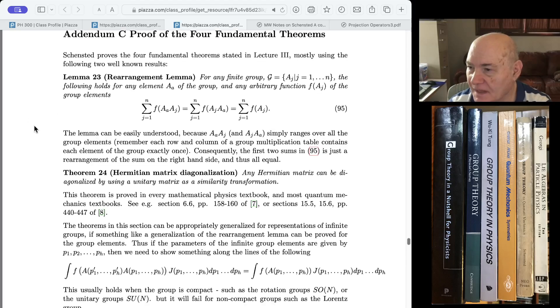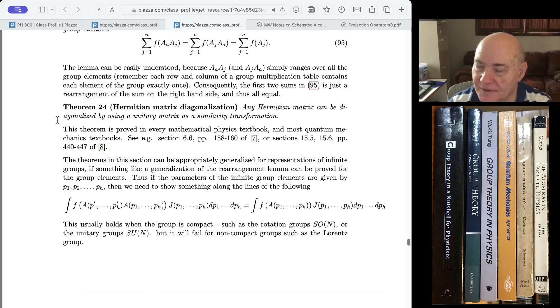The other thing we use for these proofs is something you do in quantum mechanics or linear algebra, Hermitian matrix diagonalization. Any Hermitian matrix can be diagonalized by using a unitary matrix as a similarity transformation. So this is proved in all quantum mechanics textbooks and mathematical physics. So you can see Barton Zwiebach's book or you can look at Matthews and Walker.